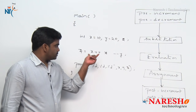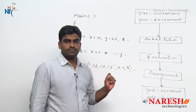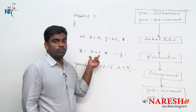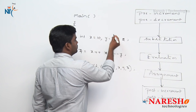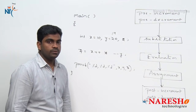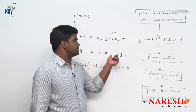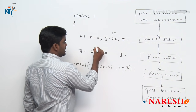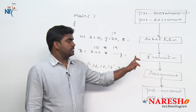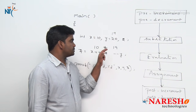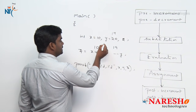This expression is evaluated using the 5 steps. First step: pre-increment and pre-decrement. How many pre-increments? No pre-increment. How many pre-decrements? Yes, pre-decrement is there — y decreases, so y value becomes 19. Second step: substitution of values — substitute x value 10 multiplied by y value 19. Second step over. Third step: evaluate 10 multiplied by 19 equals 190.